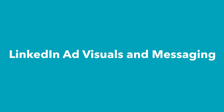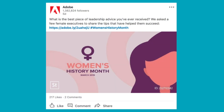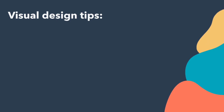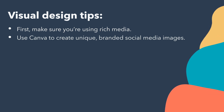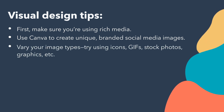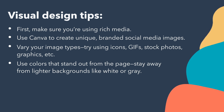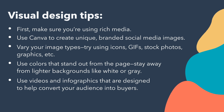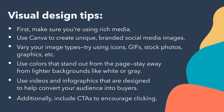Let's go over LinkedIn ad visuals and messaging. There are limitless ways to create amazing visual ads — it just takes creativity, a lot of testing, and the right tools. Whether you're using a graphic or a video, make sure you're designing images that set context for your content, capture people's attention, and align with your brand. Visual design tips include using rich media, a tool like Canva to create unique branded social media images, varying your image types by trying icons, GIFs, stock photos, and graphics, using colors that stand out from the page and avoiding lighter backgrounds like white or gray, and using video and infographics designed to help convert your audience into buyers. Also include CTAs to encourage clicks.